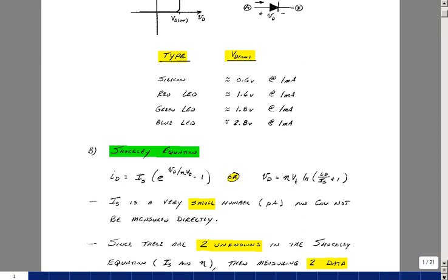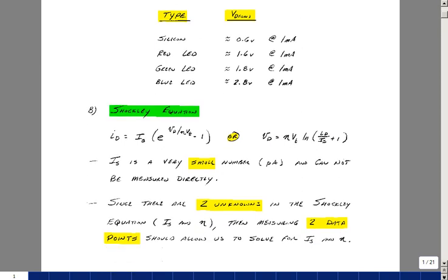For a resistor, we have a relationship between voltage and current. Here we have a relationship between the voltage across the diode and the current through it, in terms of three constants: I sub s, eta, and V sub t. You can also solve this equation for V sub d in terms of I sub d. So either equation we can use to characterize the diode. This is a non-linear equation. As shown in class, it doesn't have a closed form solution.